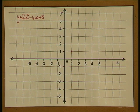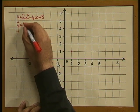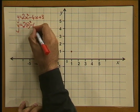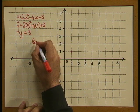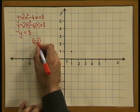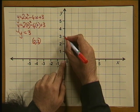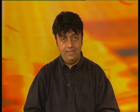We need another point in order to shape the parabola, and an easy point to get would be the y-intercept — that is, when x is equal to 0. Substituting 0 for x in the equation, we calculate that y is equal to 3. So the y-intercept is at (0, 3). Let's plot it on our graph.